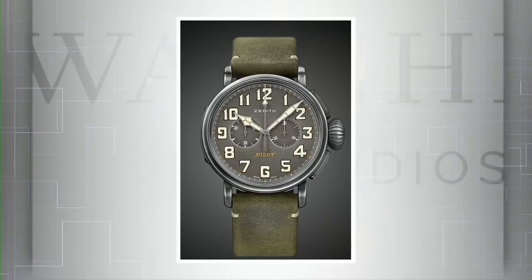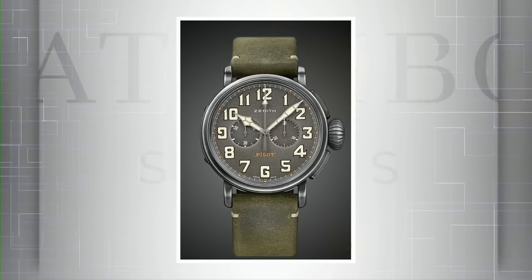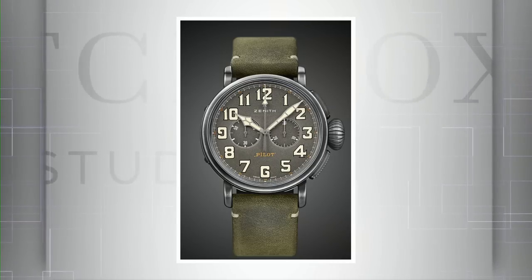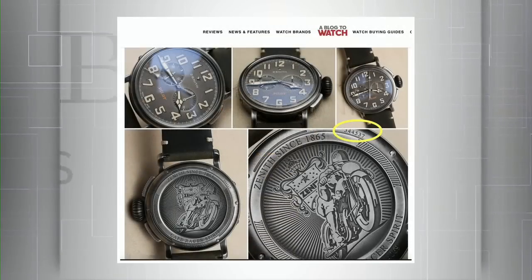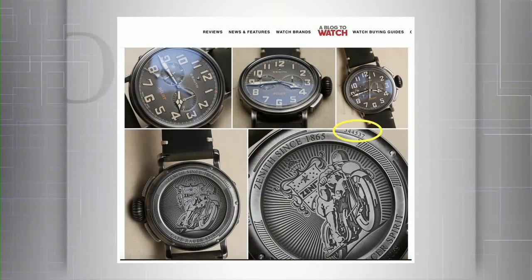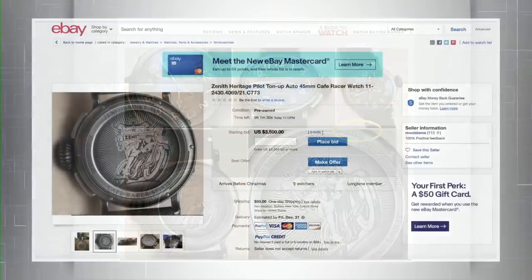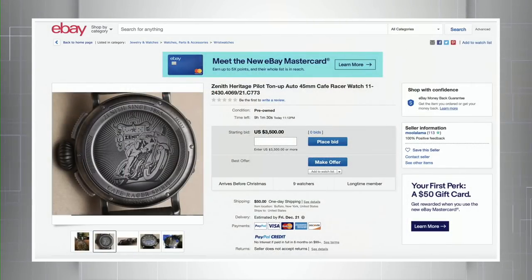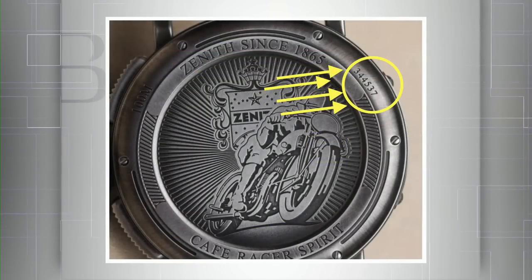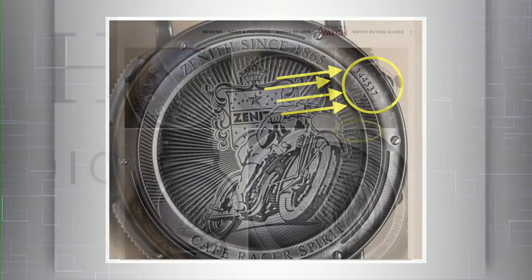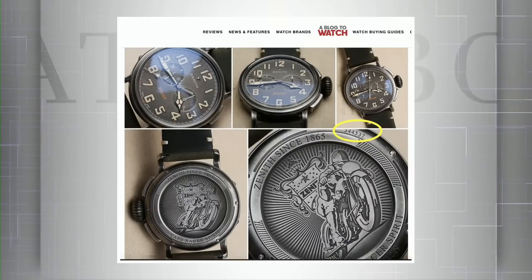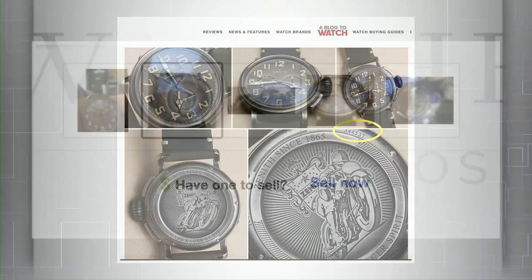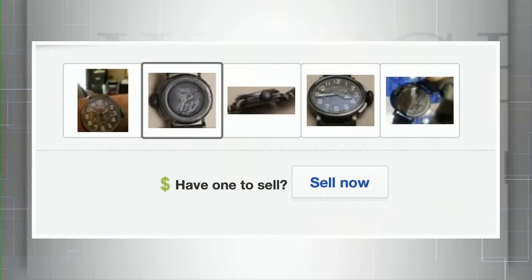Ariel Adams of A Blog to Watch reviewed a prototype serial 344537. Now there's an eBay seller offering a Ton Up, and what do you know, caseback 344537—the exact A Blog to Watch prototype unit. Or these photos are ripoffs from A Blog to Watch.